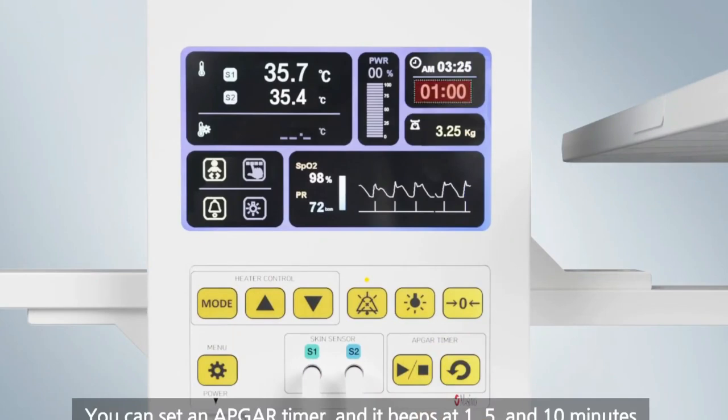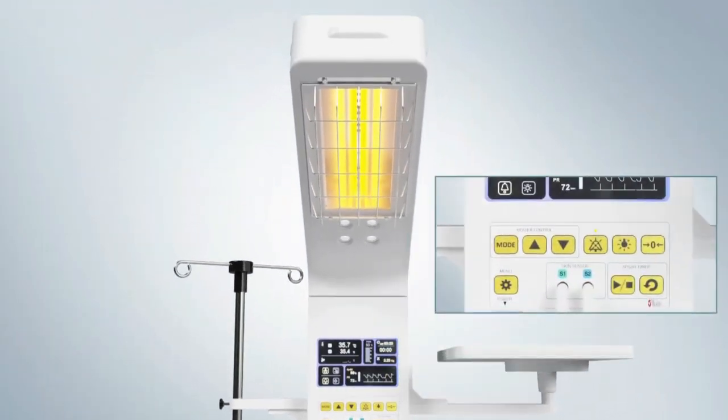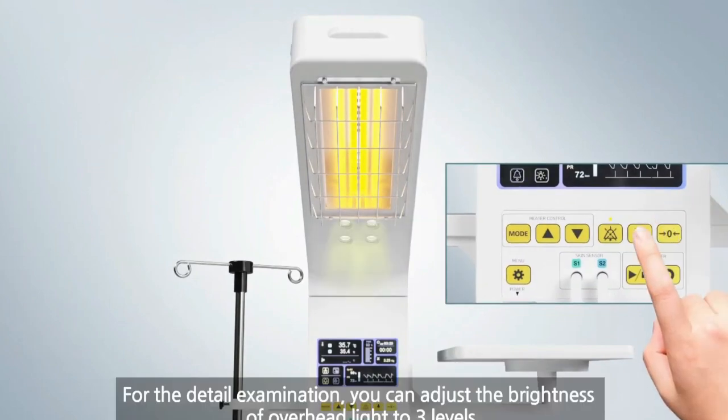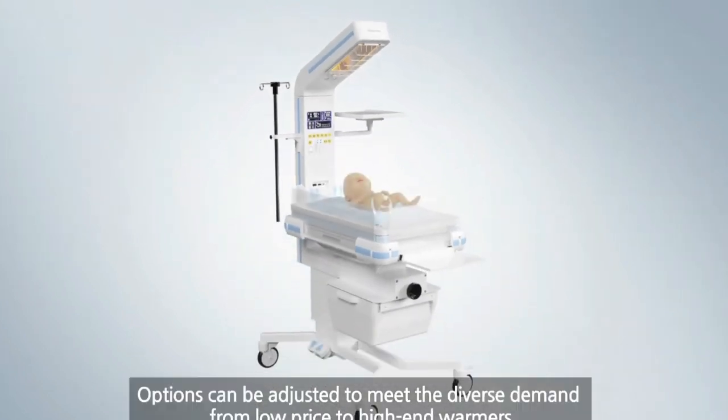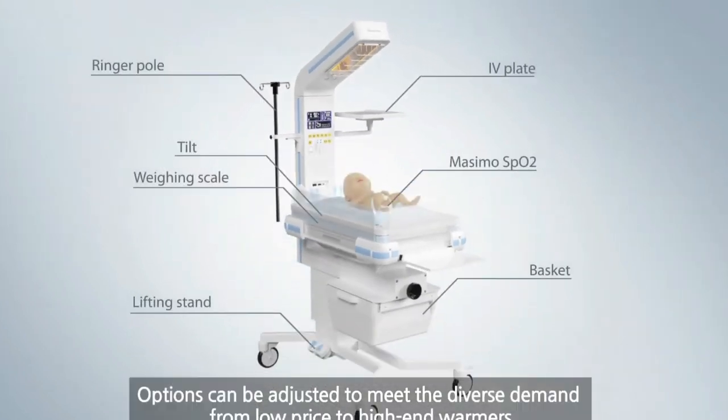Since a radiant warmer is open to the air, evaporation is a major factor of heat loss. Most radiant warmers have short walls around the perimeter of the mattress to reduce the amount of overflow over the patient and thus limit evaporative heat loss.